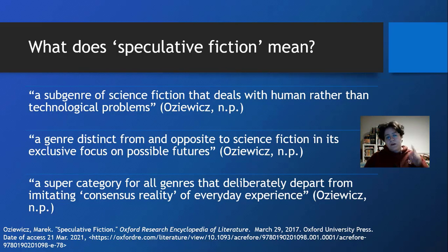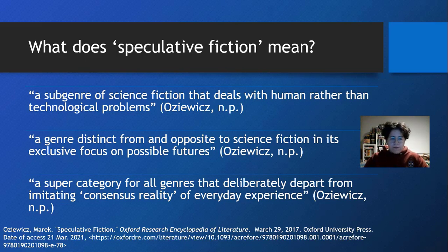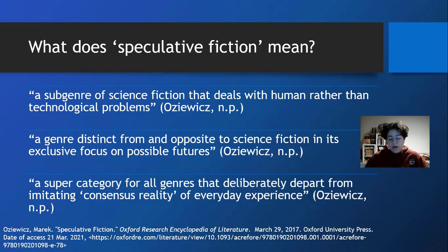Our first meaning of speculative fiction is a subgenre of science fiction that deals with human rather than technological problems. This is sometimes seen as more literary, as it often deals with questions of ethics and morality, though of course a science fiction text with a highly elaborate technological novum can ask much the same questions.